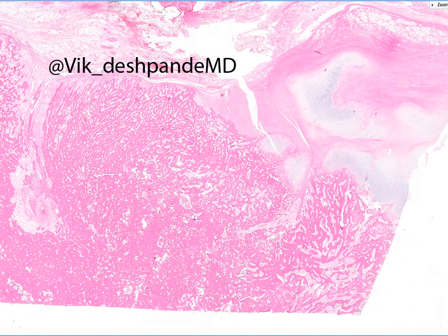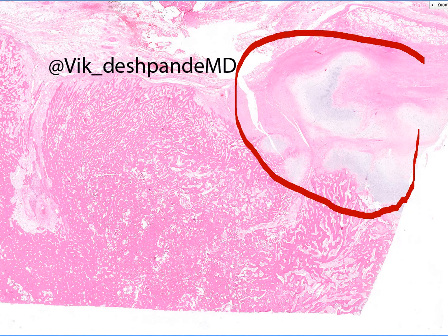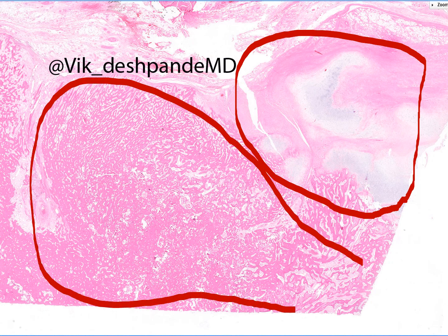Here's a very low-power view of the case. The surface of the lesion is composed of blue material, which is cartilage. The cartilage is actually fairly cellular, as we'll see in subsequent slides. You can imagine a biopsy capturing this area and being tempted to call this a surface chondrosarcoma. Beneath this is a heavily ossified lesion with thick seams of bone separated by relatively poorly cellular stroma.